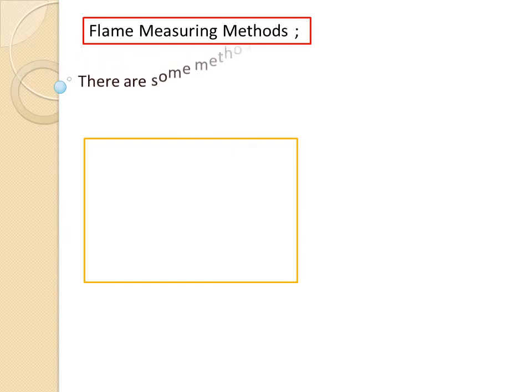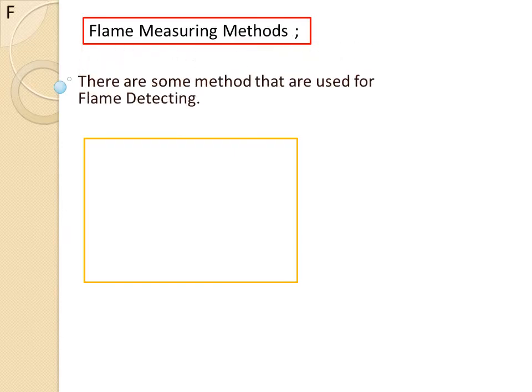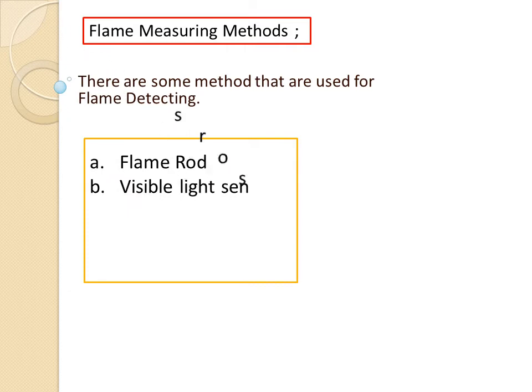There are some methods used for detecting flame: Flame Rod, Visible Light Sensors, Infrared Sensors, and Ultraviolet Sensors.